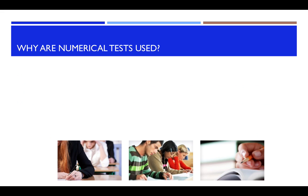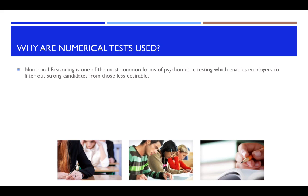So why are numerical tests used? Numerical reasoning is one of the most common forms of psychometric testing which enables employers to filter out strong candidates from those less desirable. Most recruitment processes now contain a form of psychometric and aptitude testing so it's important that you are 100% prepared.